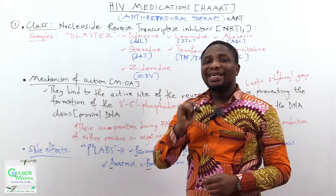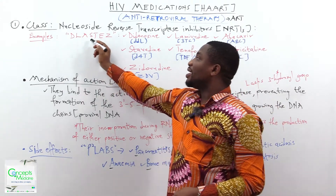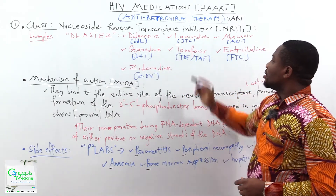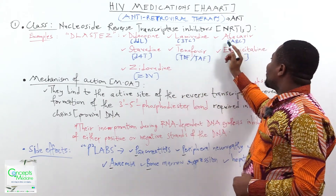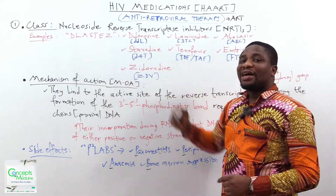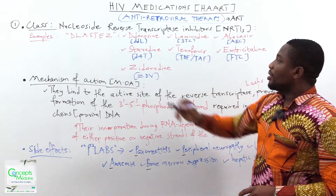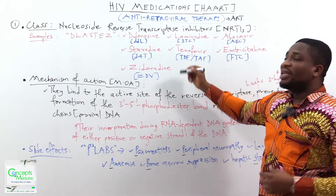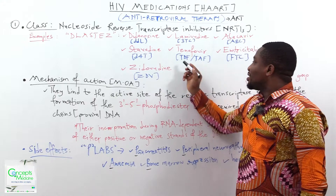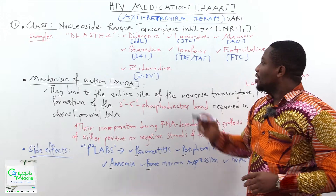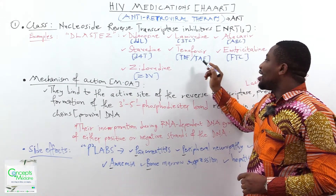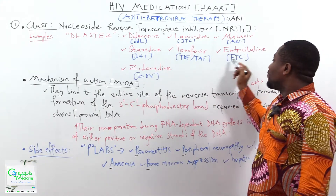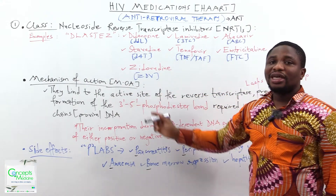We can remember the examples using the mnemonic DLASTEZ. D stands for didanosine (DDI). L is lamivudine (3TC). A is abacavir (ABC). S is stavudine (D4T). T is tenofovir, which can be written in two forms — TDF (tenofovir disoproxyl fumarate) or TAF (tenofovir alafenamide). E stands for emtricitabine (FTC). Finally, Z is zidovudine (ZDV).